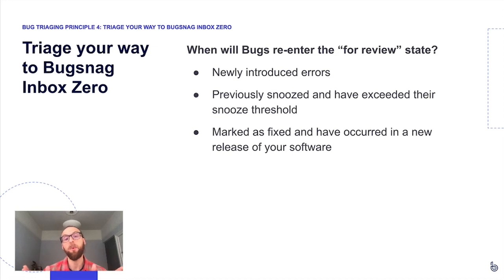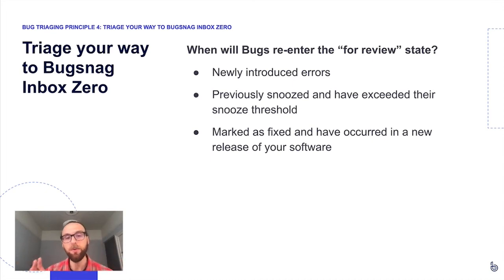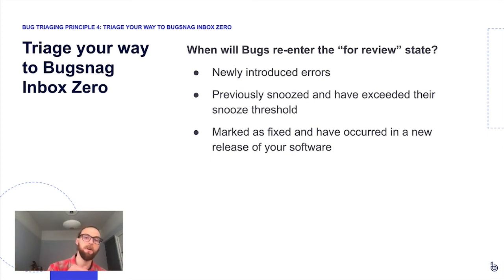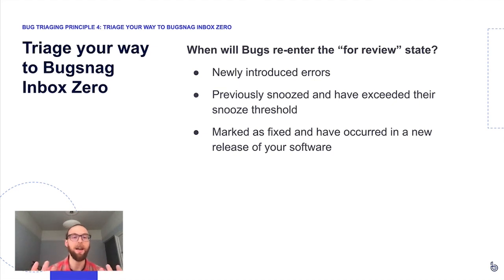A common question is: when will bugs go back into the 'For Review' state? Newly introduced bugs that BugSnag has never seen before will always go into 'For Review.' Previously snoozed bugs that have exceeded their snooze thresholds will also return. And bugs marked as fixed that reappear in a new version of your software will return to 'For Review' as well. In all these cases, their context has changed — they've begun happening more frequently or in a version where you weren't expecting them — so you need to reassess.